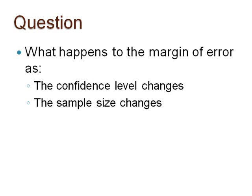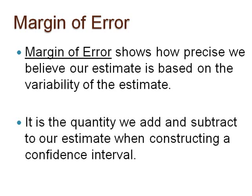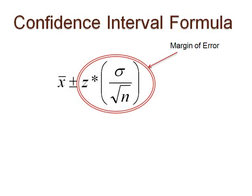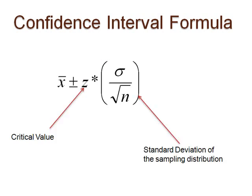The margin of error shows how precise we believe our estimate is based on the variability of the estimate. Literally, it is the quantity we add and subtract to our estimate when constructing a confidence interval. The estimate referred to is the sample mean x-bar. Here is the confidence interval formula. The margin of error includes two pieces: the critical value z-star and the standard deviation of the sampling distribution.